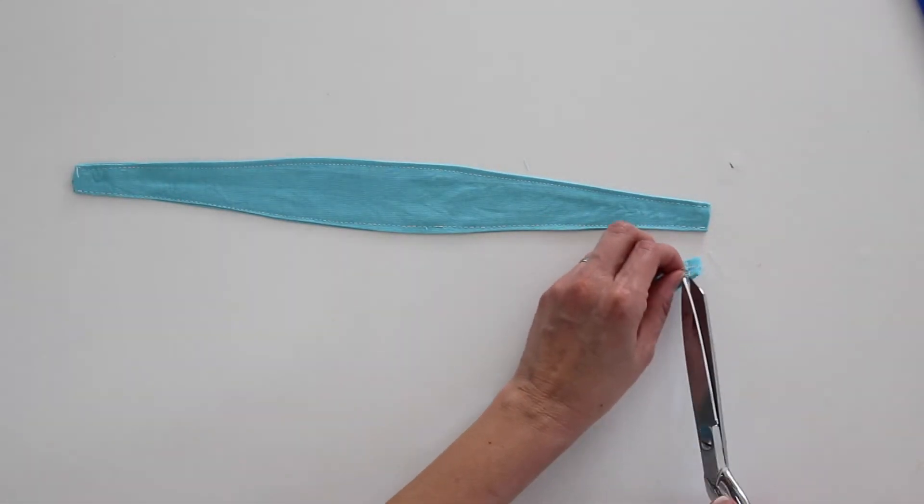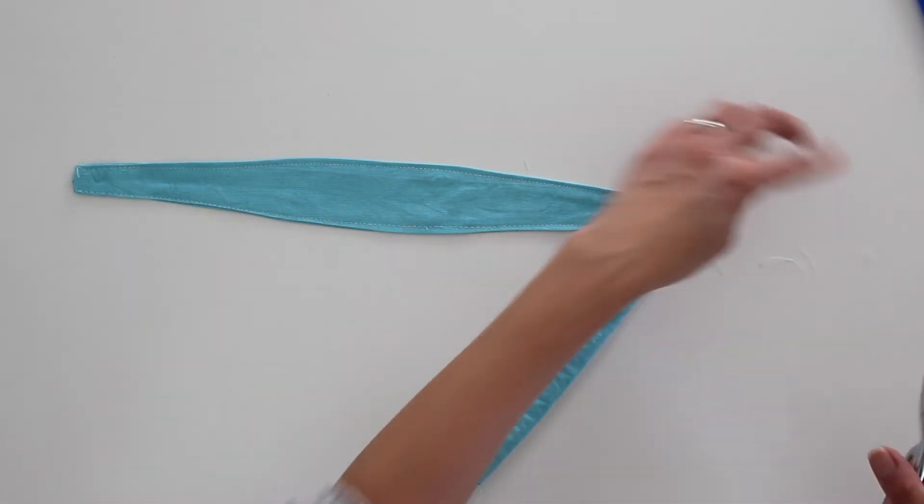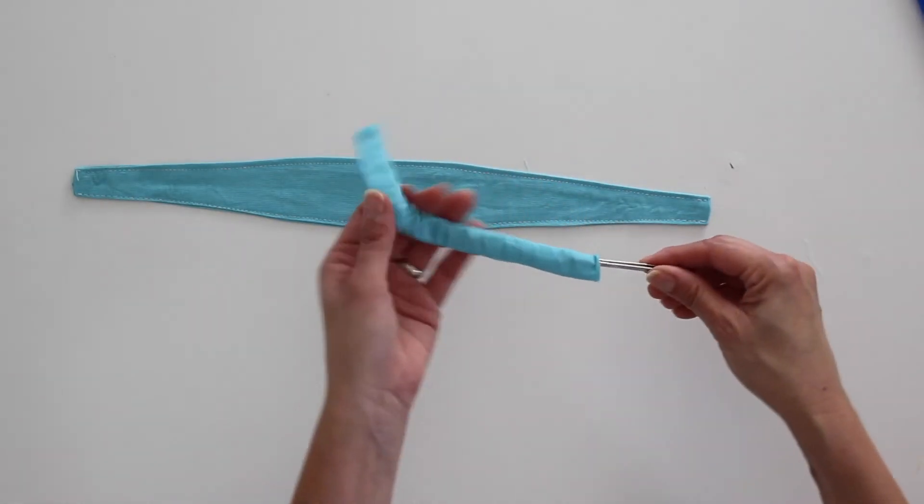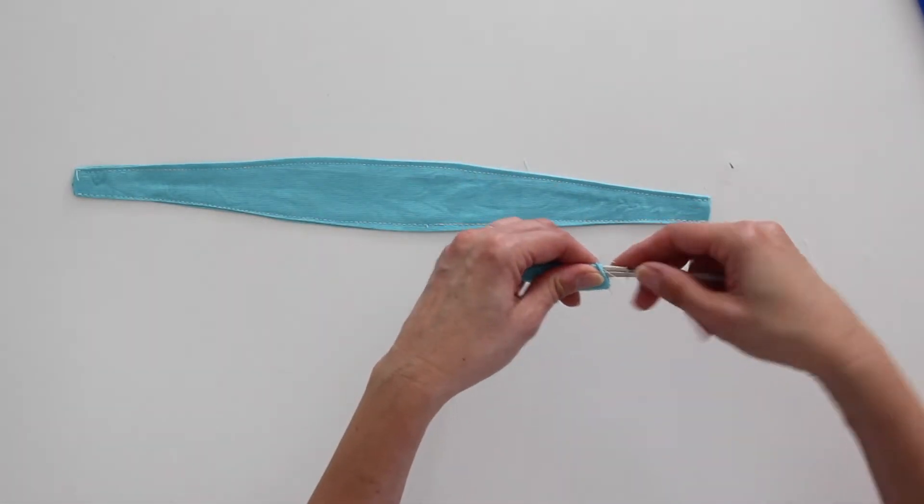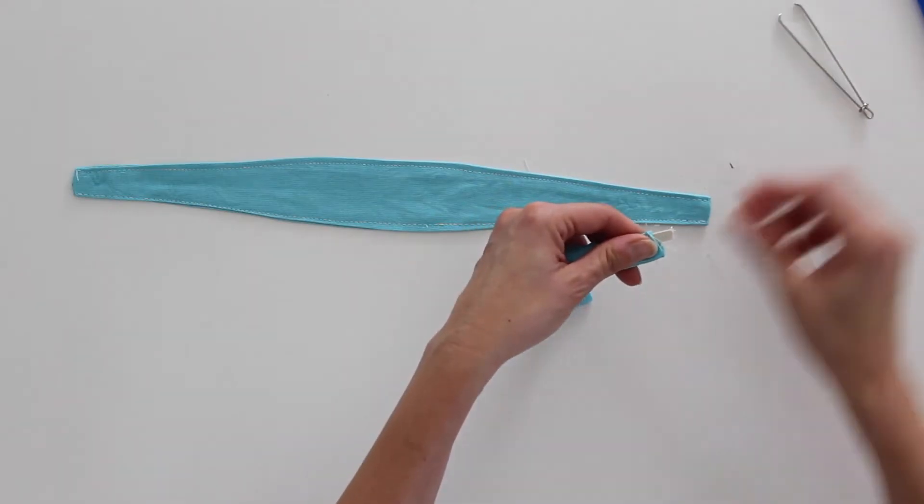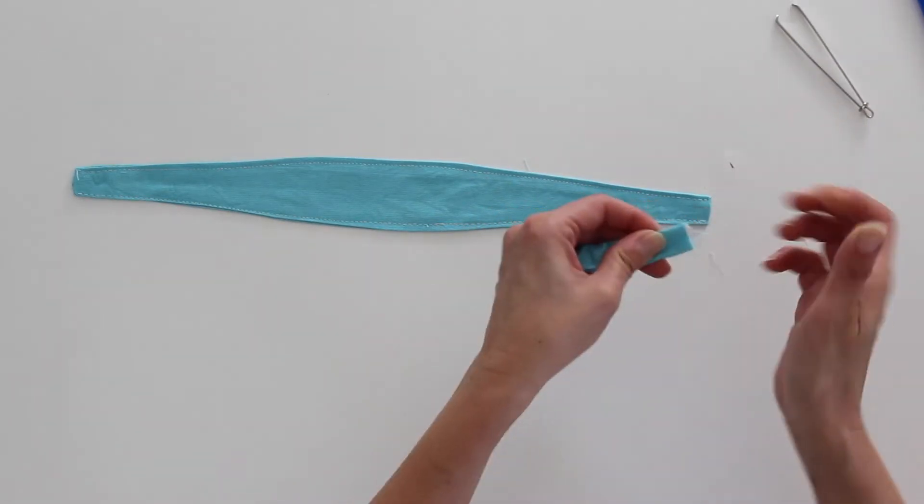Trim off those extra threads. And now I'll go ahead and pull the other end of the elastic through, take my bodkin off, and I will stitch across this end as well.